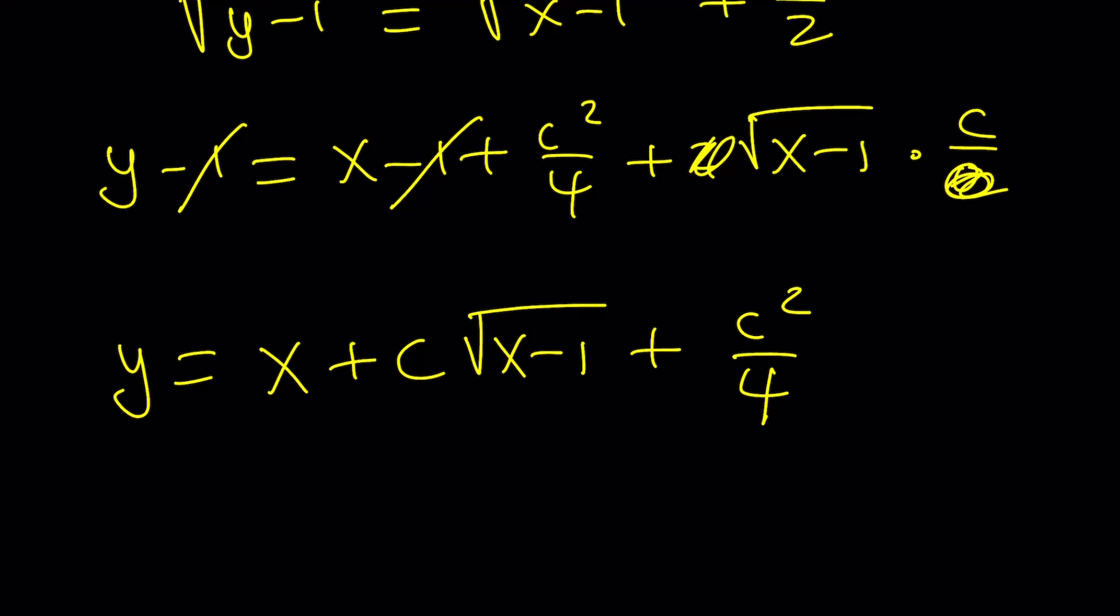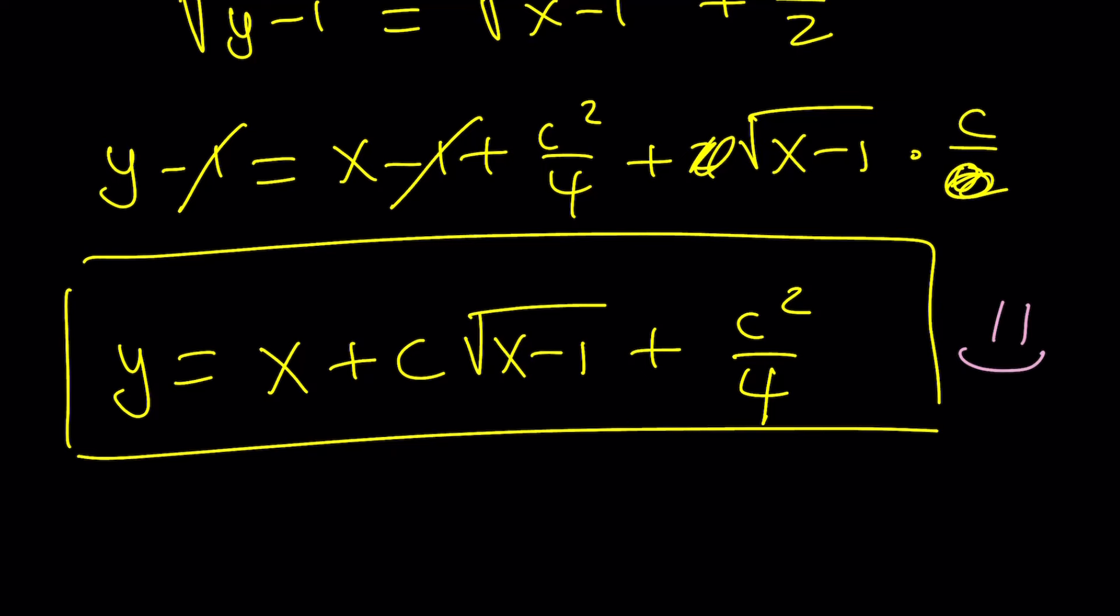Now, can I replace c squared divided by 4 by another constant? Yes, but then you have to change the c. So, these are not totally independent. And that should give you the solution. Let's go ahead and check our answers against Wolfram Alpha. And then we're going to see what happens. Did we get the same thing? Make a note of this. And we're going to take a look.